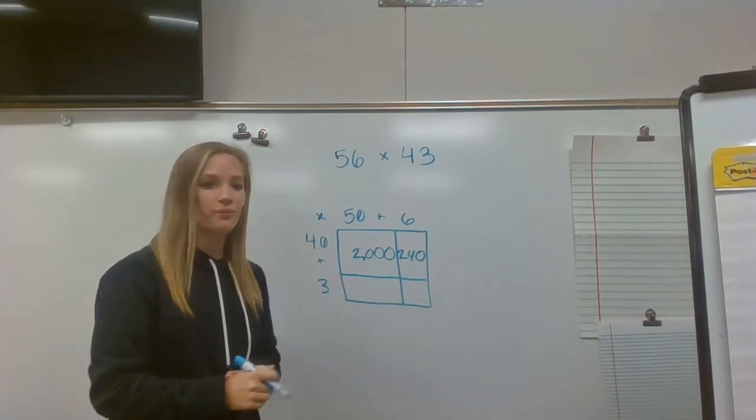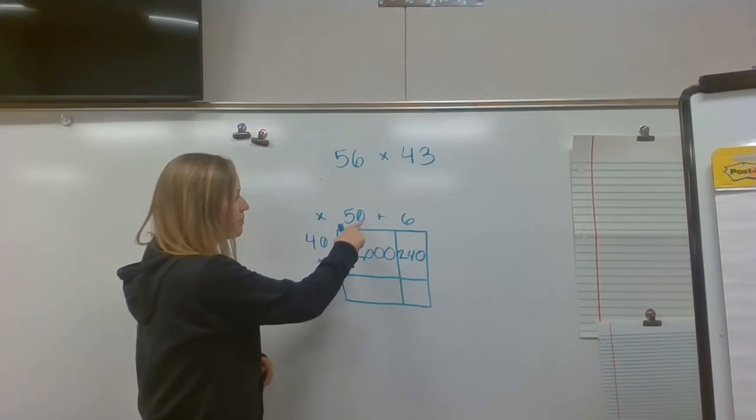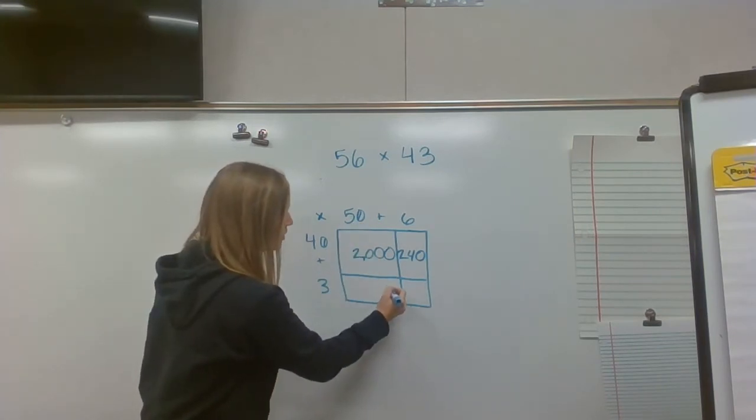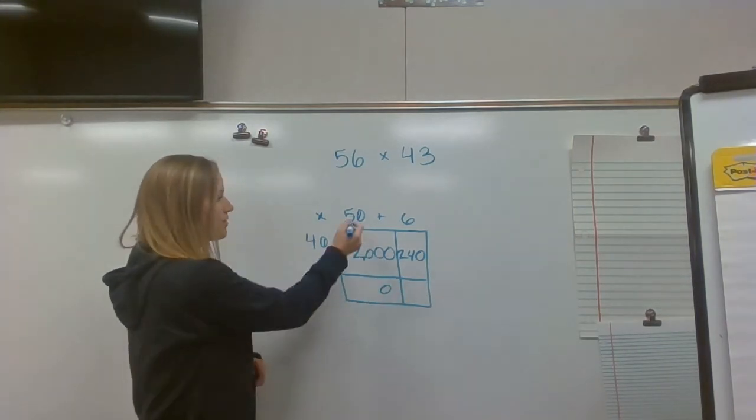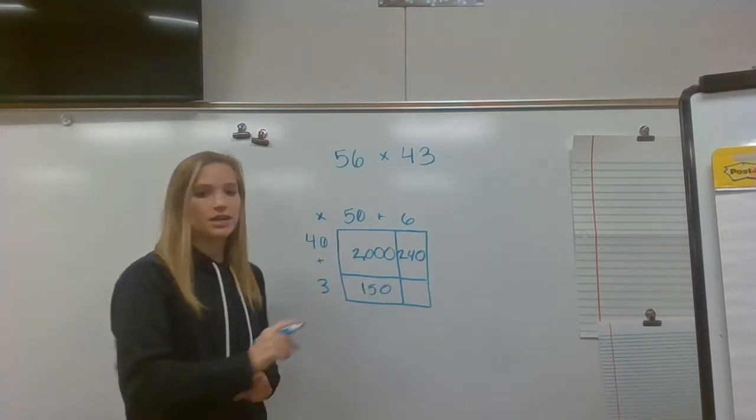Then I'm going to move over to this row. I have 50 times three. I don't have a zero here, but I have one right there, so I'm just going to put one zero in there. And I'm going to do five times three, and that's 150.